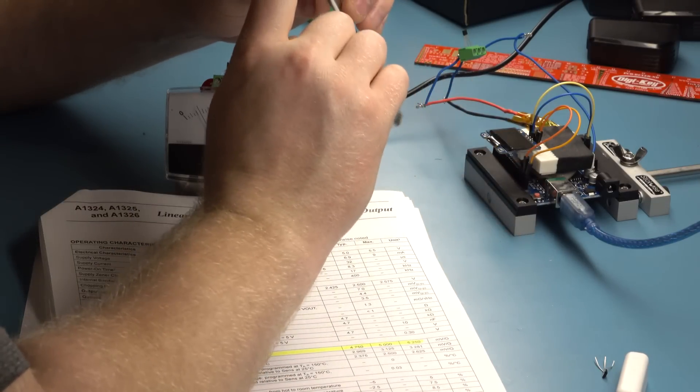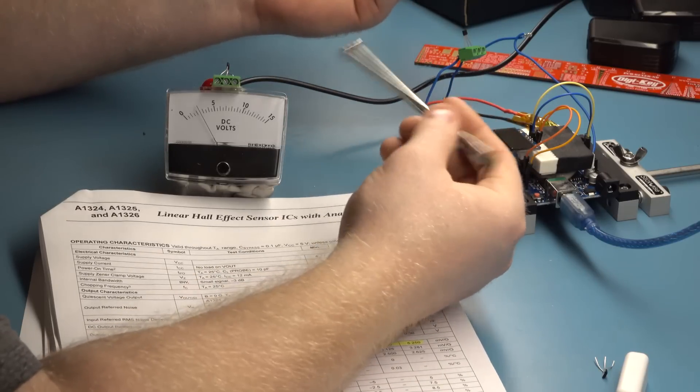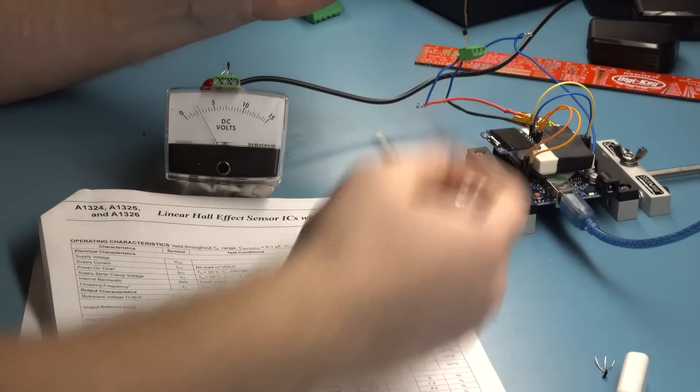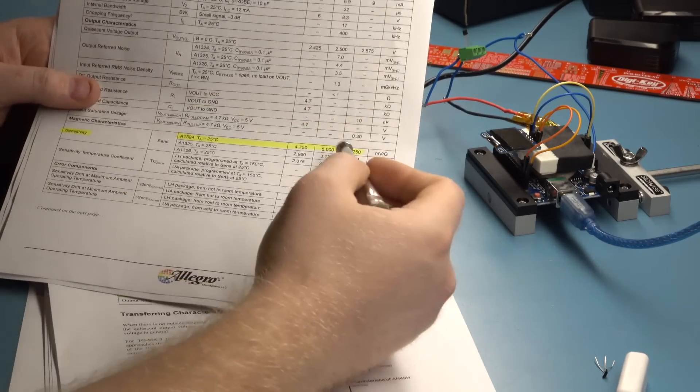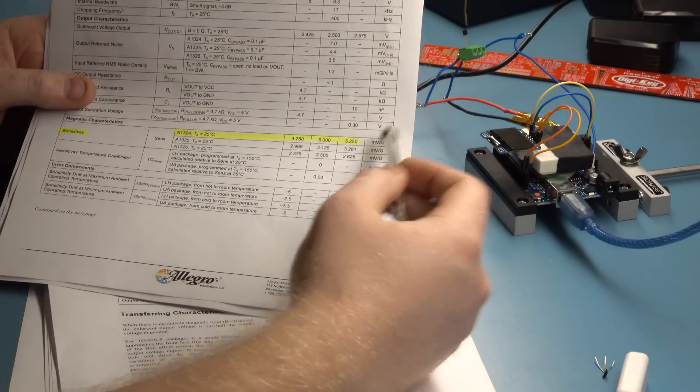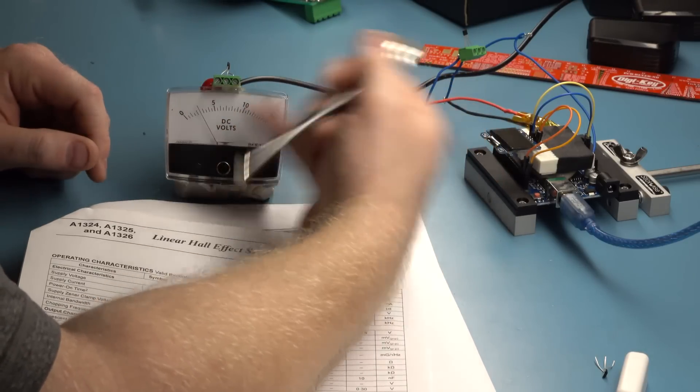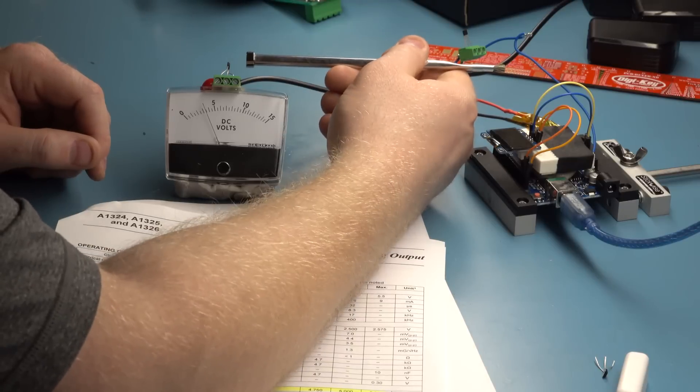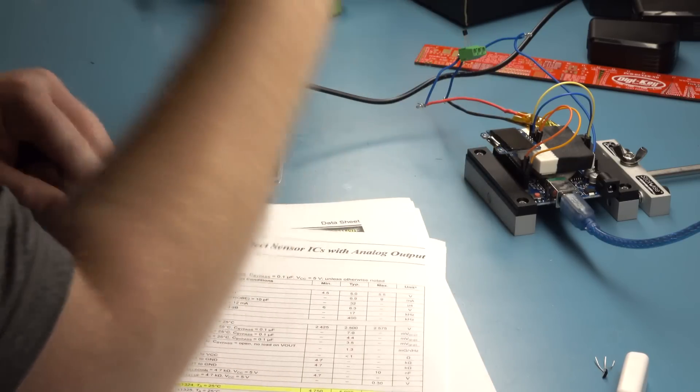So we measure the strength of a magnet in units called Gauss. So this particular chip, if you look at the data sheet, has a sensitivity of 5 millivolts per Gauss. So every 5 millivolts above 2.5 would indicate the Gauss reading of this magnet.